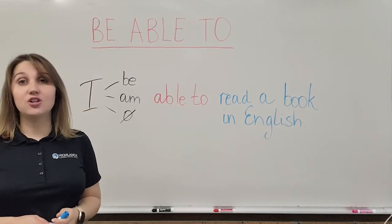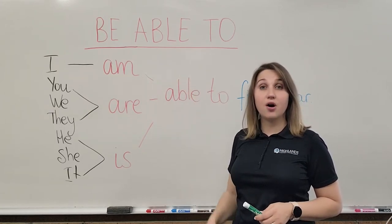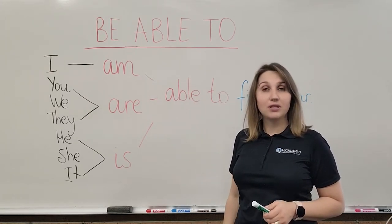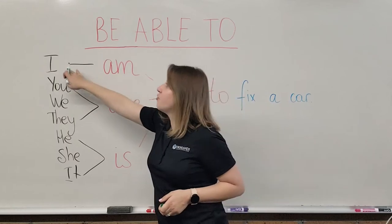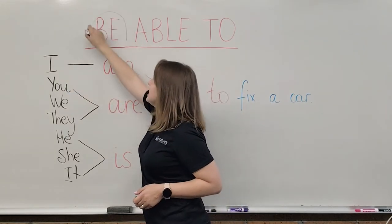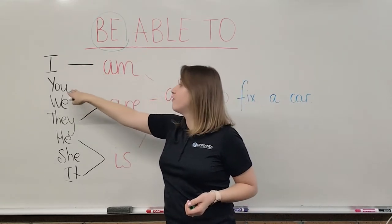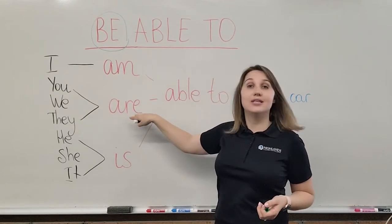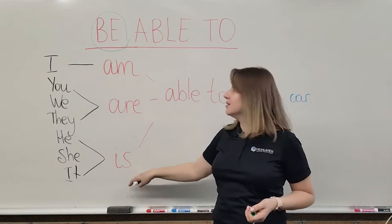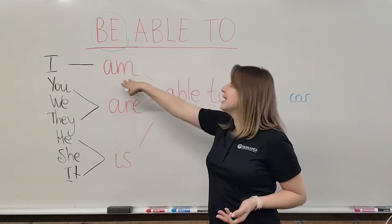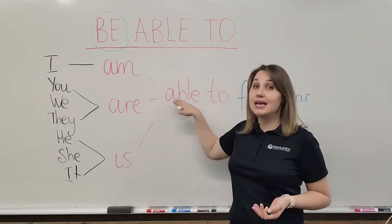The modal form 'be able to' is used to talk about ability and possibility. We will discuss the way we use it for the present simple form. Depending on what kind of pronoun you are using, the part 'be' is going to change. For 'I,' you use 'am.' For 'you,' 'we,' and 'they,' we use 'are.' And for 'he,' 'she,' and 'it,' we use 'is.' So it will sound: 'am able to,' 'are able to,' or 'is able to.'